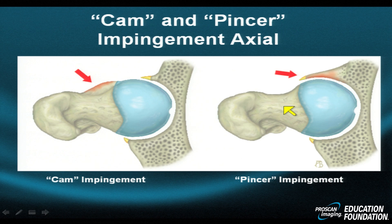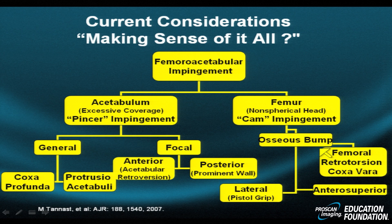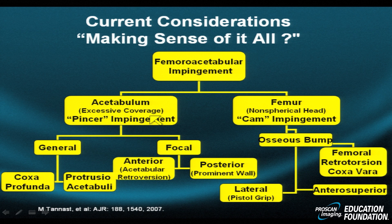There are other ways to categorize impingement syndrome. A long, extensive anterior labrum combined with an overgrown posterior labrum may produce a pincer phenomenon analogous to a crab claw. This diagram, developed by Tannast and presented in the American Journal of Radiology in 2007, shows how pincer impingement is more of an excessive acetabular coverage phenomenon, whereas cam type impingement is more often a femur — especially a femur neck — phenomenon.